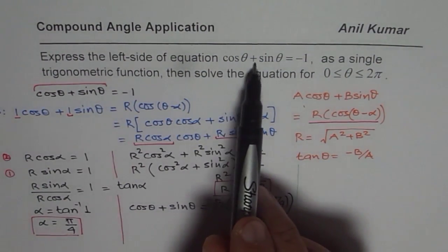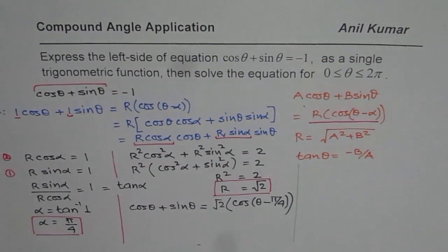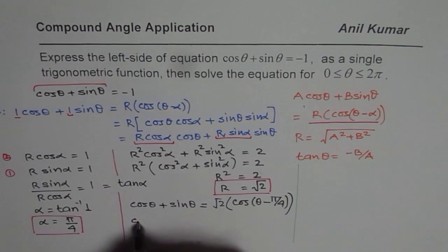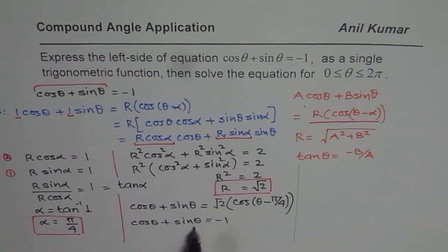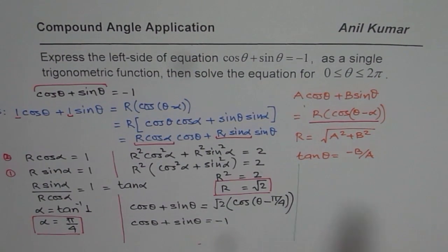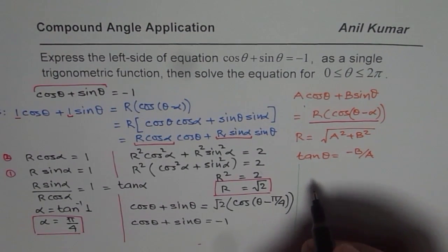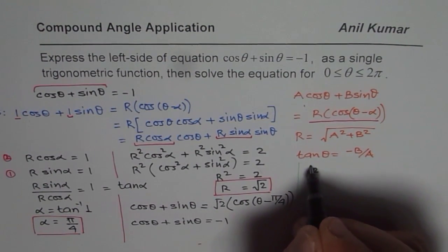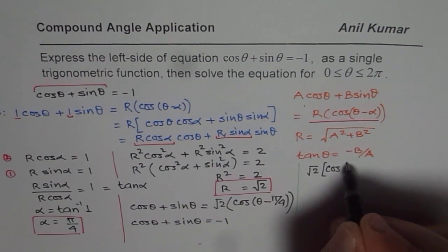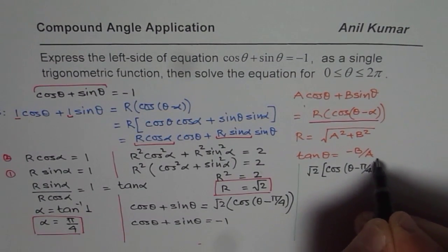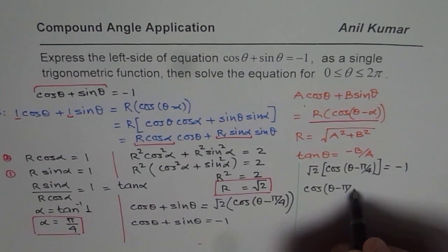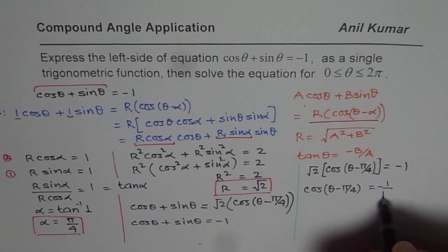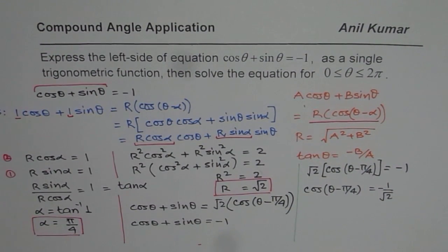The original equation is cosθ + sinθ = -1. Replacing cosθ + sinθ with √2·cos(θ - π/4) gives √2·cos(θ - π/4) = -1, which simplifies to cos(θ - π/4) = -1/√2. That is how we solve this equation.